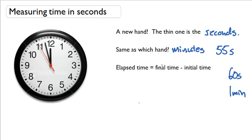But how do we calculate elapsed time now that we have seconds? Well, it's pretty much the same thing as what we've done before. We use the same equation: elapsed time equals final time minus the initial time.